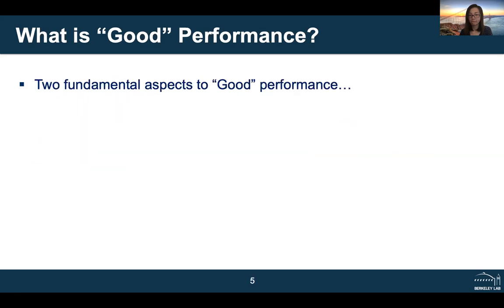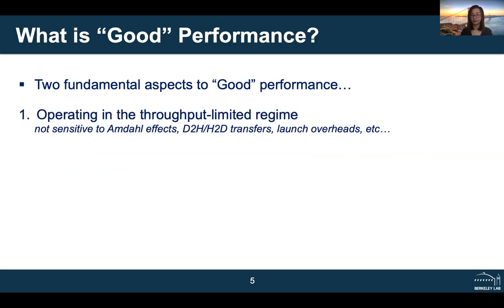To get to the core question of what is good performance, we need to address two fundamental aspects. First, to attain good performance, you have to be operating your GPU in the throughput-limited regime — not sensitive to Amdahl effects, no sequential bottleneck, no device-to-host or host-to-device transfers impeding performance, running with data primarily on the device, and launch overheads that are relatively small. You want long millisecond or one-second kernels to amortize that overhead.